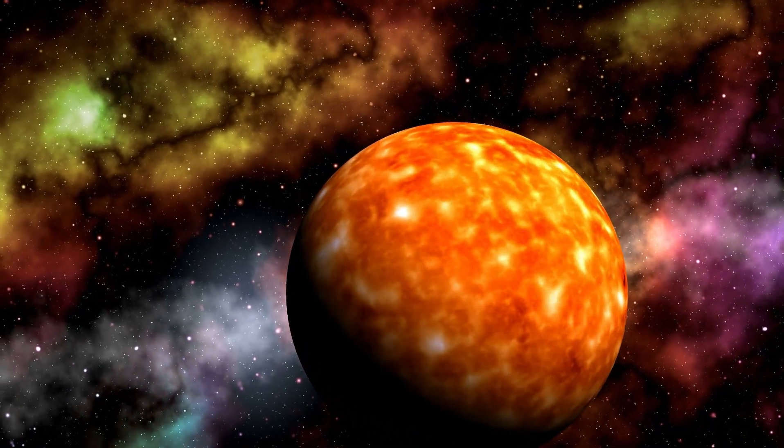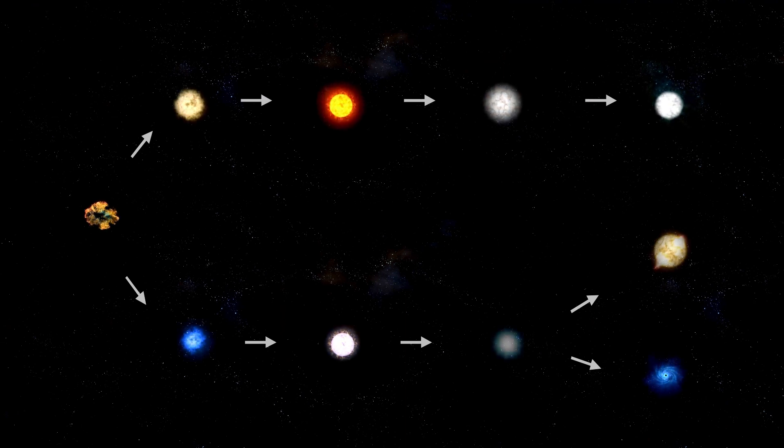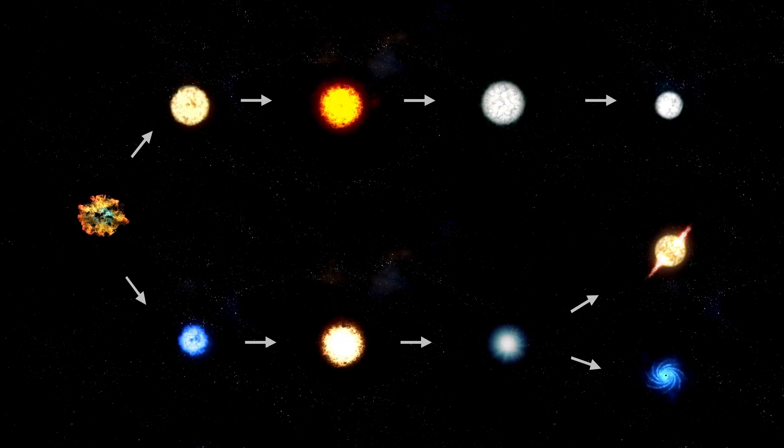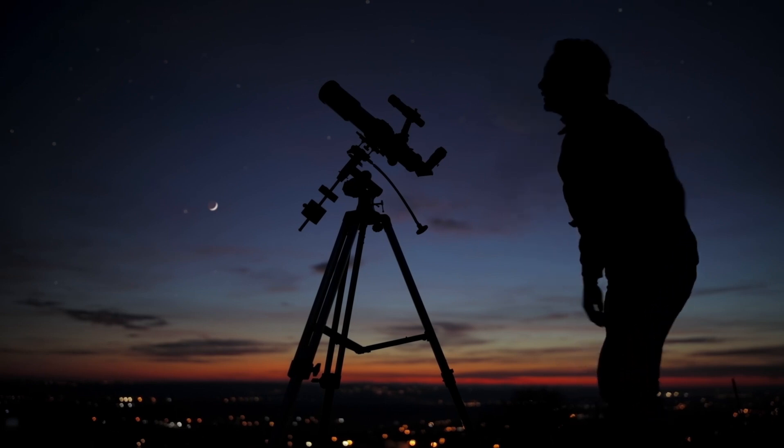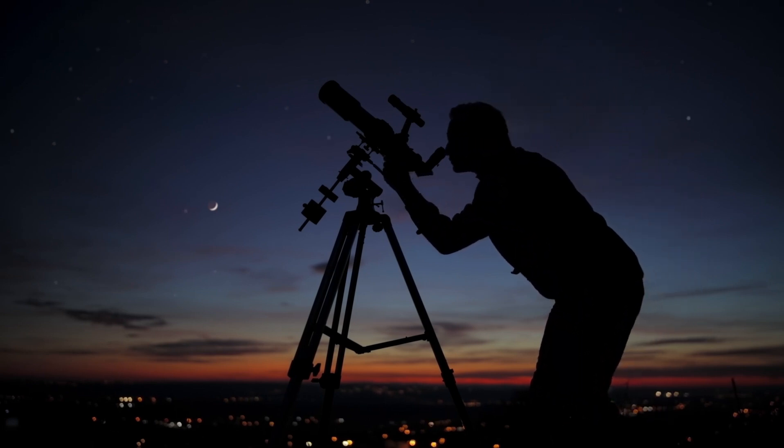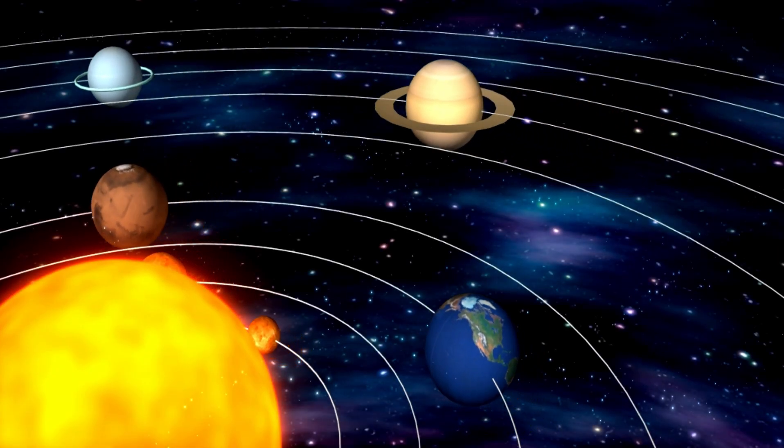Sometimes, Betelgeuse can get really dim. This is what we call a V-band magnitude, and in February 2021, it was reported to have its lowest V-band magnitude in a while, which was a magnitude of plus 1.614. That's still pretty bright, but it's definitely dimmer than what we're used to seeing from Betelgeuse.